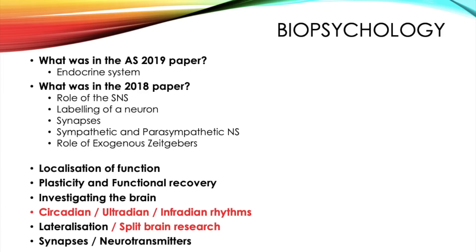Looking at what was in the 2018 paper, it was very AS-content heavy, so this year they could take a turn and go for some more A-level content. What do I think could come up in the 2019 paper? You've got localisation of function, whereby you just need to know about your motor, somatosensory, visual, and auditory centres, as well as the language areas of the brain.